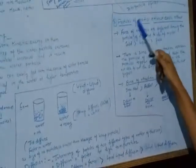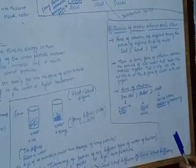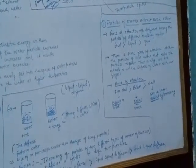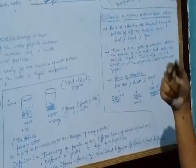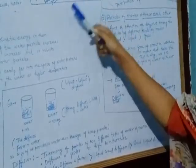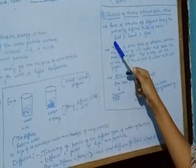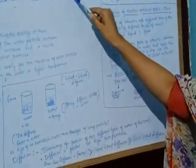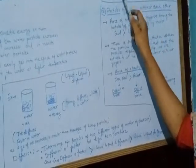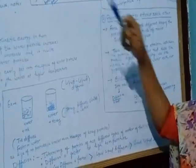The fifth physical property is that particles of matter attract each other. There is a force of attraction between particles of matter that keeps them together — that is why we are not able to cut the surface of water with our fingers. The force of attraction is different in solids, liquids, and gases. In solid, the force of attraction is most; in gases, it is least.